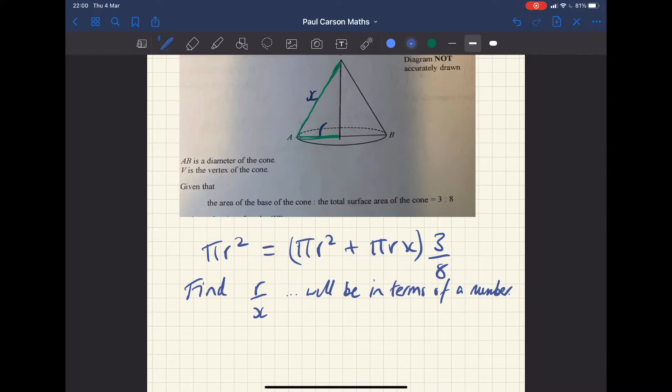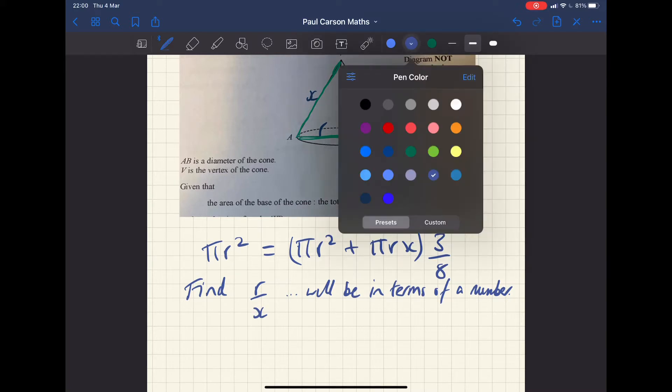Times three to eight, which is going to make them equal to each other. So what we're trying to do here is find r over x. Because what we want to find, of course, is the angle.